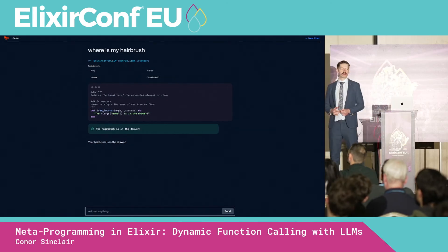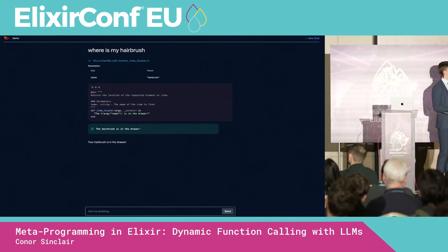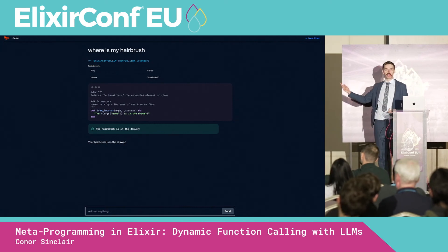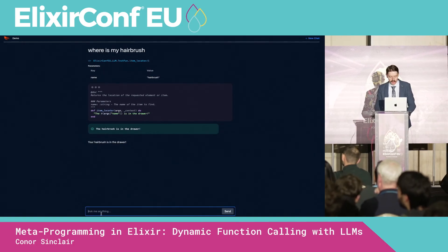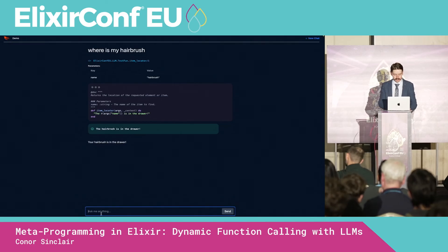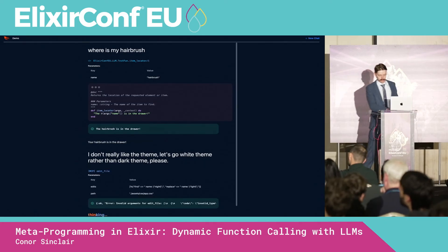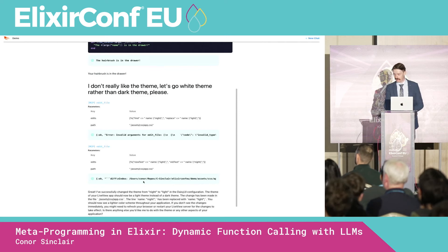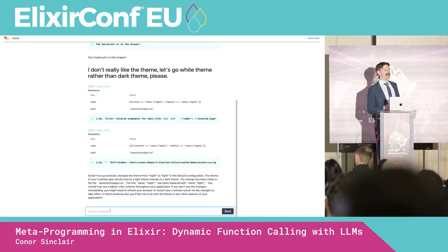I've got the file system MCP server hooked up in this application, and the directory I've given it is its own source code. This means the LLM can edit any of the files in the running LiveView, and we should be able to see them reflected in real time. Let's get it to do something: 'I don't really like the theme. Let's go light theme rather than dark theme, please.' It's trying to edit the file. It actually failed the first time — but whoa, there we go. The UI just switched to a light theme. That's pretty cool — it can edit its own files.